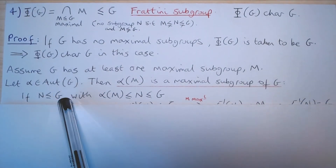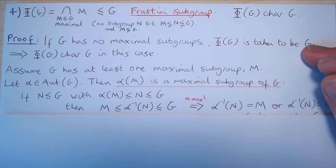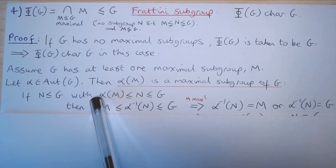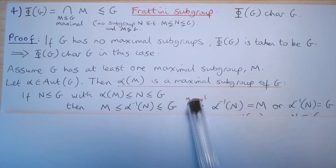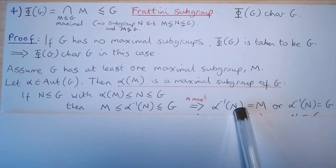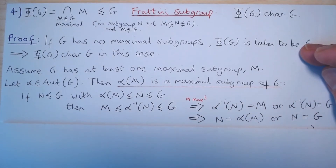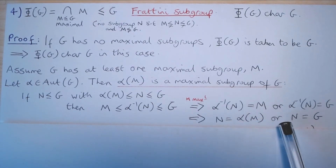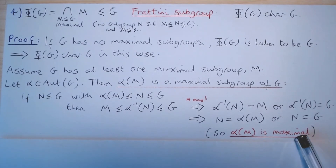Suppose N is a subgroup of G and α(M) is a subgroup of N. Then applying α⁻¹ to all of these yields M is a subgroup of α⁻¹(N), which is a subgroup of G. Since M is a maximal subgroup of G by assumption, this says that α⁻¹(N) either equals M or equals G. Applying α to both sides, we get that N equals α(M) or N equals G. In other words, α(M) is a maximal subgroup of G.